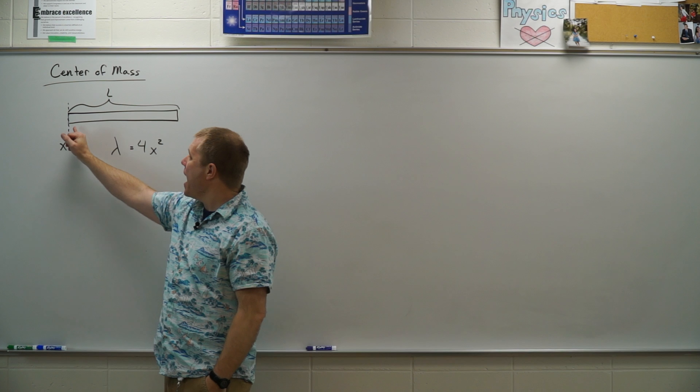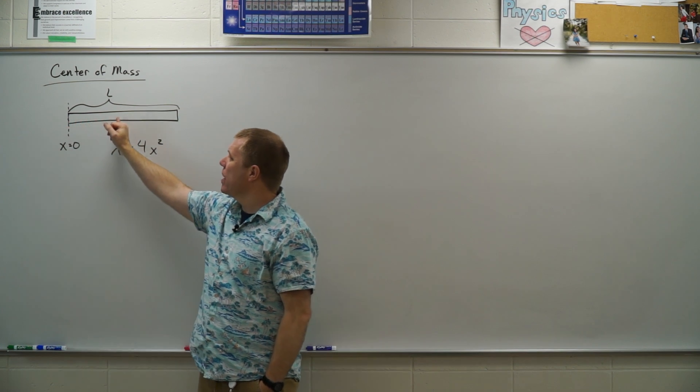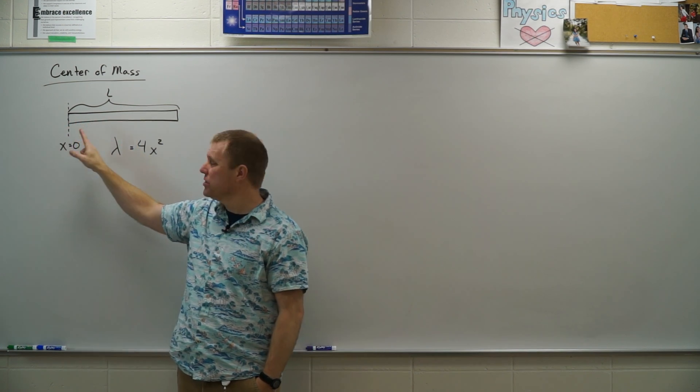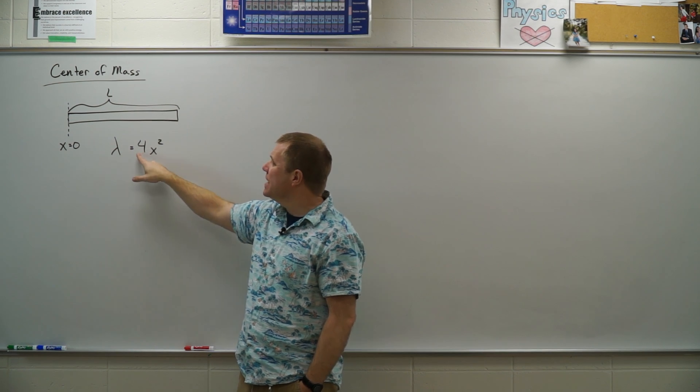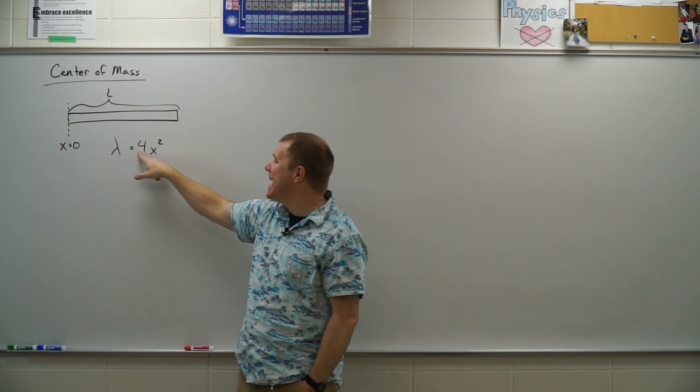So that means that as the rod gets further away from the x equals zero point, which we're going to say is on its left end here, the linear density increases.